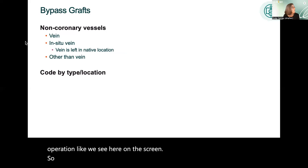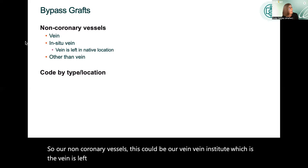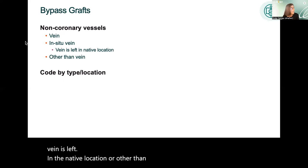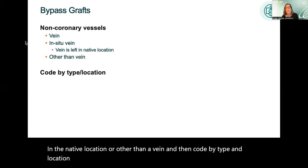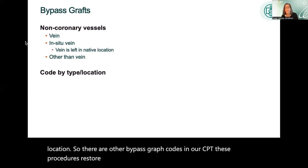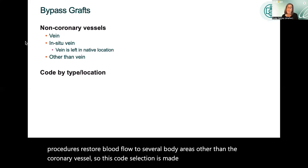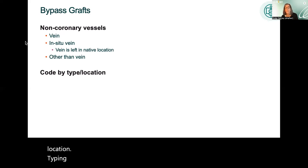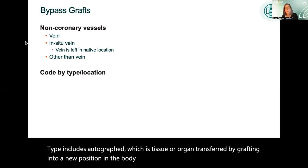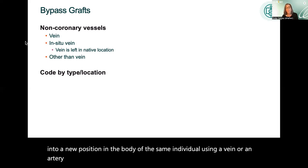For non-coronary vessels — which can be vein, vein in situ (where the vein is left in its native location), or other than a vein — code by type and location. These procedures restore blood flow to several body areas other than the coronary vessels. Code selection is based on the type of graft and location. Autograft involves tissue or organ transferred into a new position in the same individual using a vein or artery, with synonyms including autogenous and autologous. Synthetic grafts may also be used.